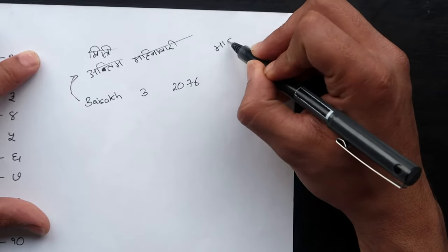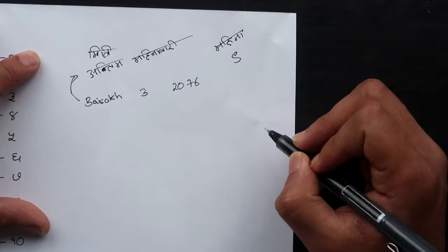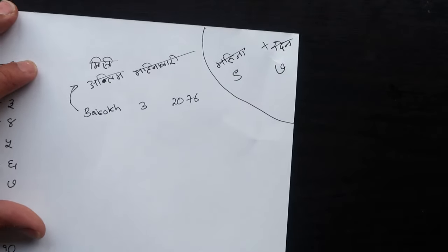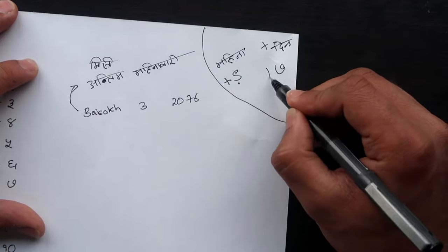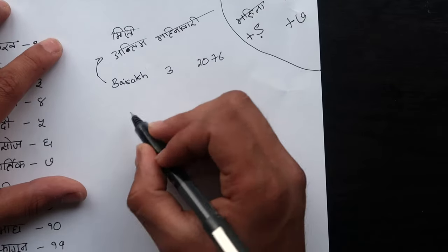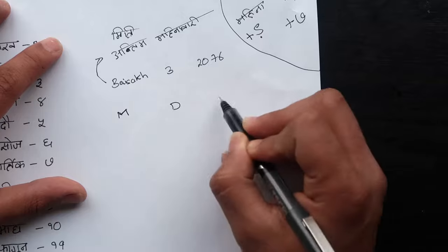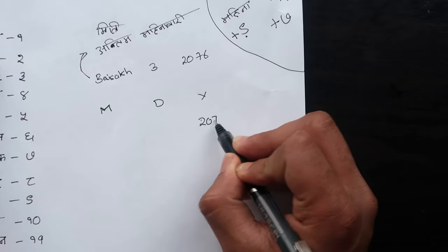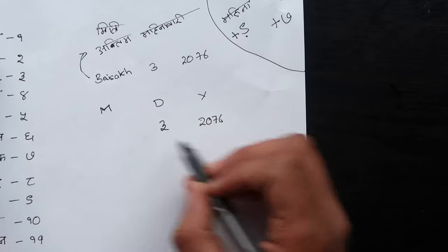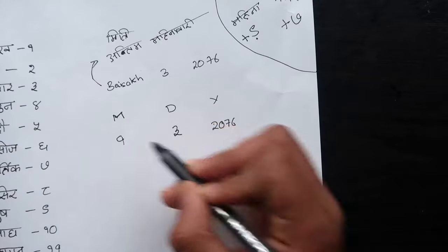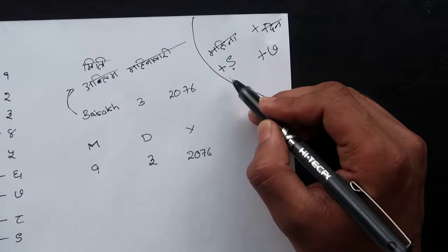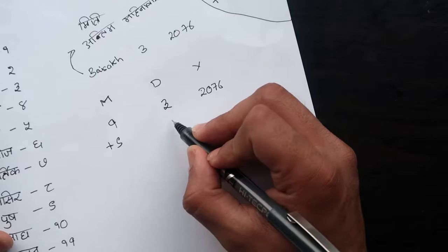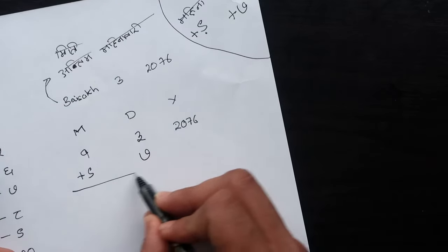First, we need to add 9 times to the day and 7 times to the day. We need to remember that. M is month, D is day, Y is year. The year is 2017. We need 9 times to the day and 7 times to the day during the day.